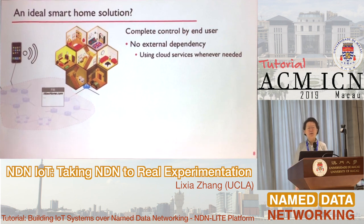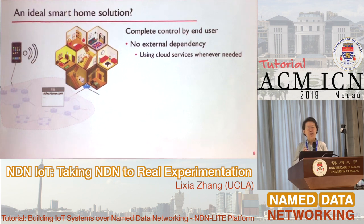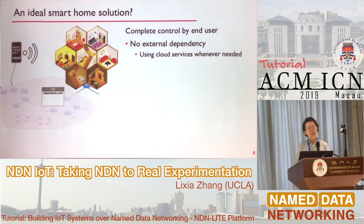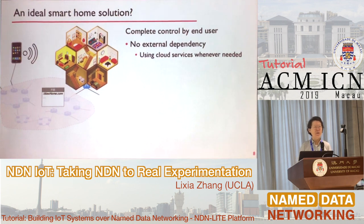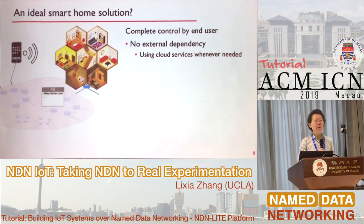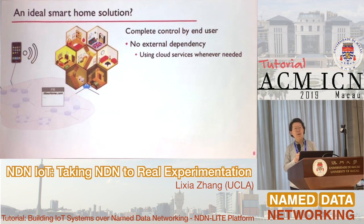People often ask whether we're going to get rid of cloud services. No. The point is not whether you use cloud service or not — the question is really who is in control and whether there is external dependency. The goal of a locally controlled smart home system is to remove that dependency. Whether the cloud works or not, whether your external network connectivity works or not, your smart home should work. You use the cloud as a service — just like you have local home storage but may also use cloud storage as a backup.